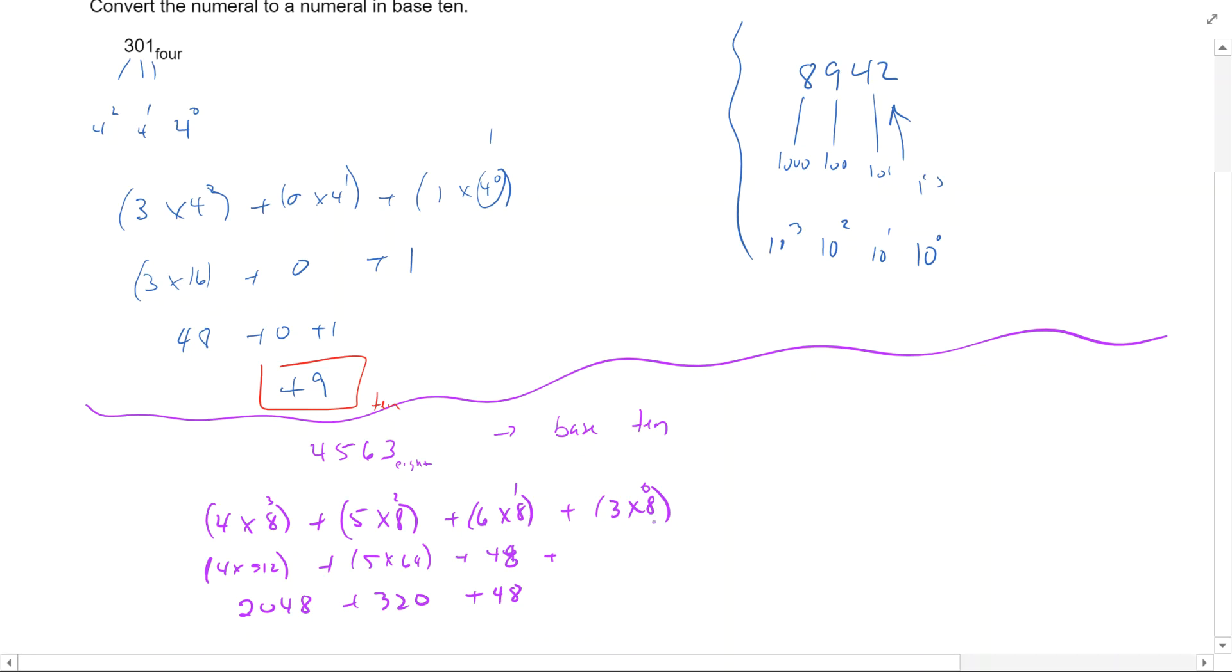And then the last one, I got 3 times 8 to the 0. So remember, that's 3 times 1. So add these up together. I have 2048 plus 320 plus 48 plus 3 will give me 2419.